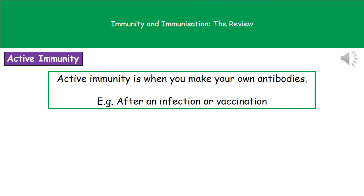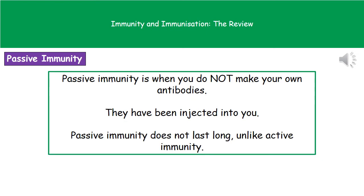We experience two different types of immunity. The first is active immunity, where our body is making its own antibodies — this is what we'd experience after an infection or after a vaccination. The second is passive immunity, where we don't make our own antibodies; instead, the antibodies have been injected into us. A key difference is that passive immunity is very limited in the time it lasts, whereas active immunity lasts much longer.